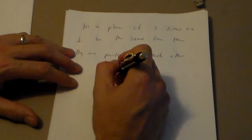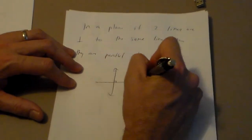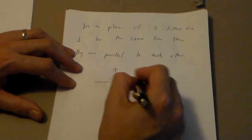So if I have a line like that and a line like that and a line cuts through and this is perpendicular and this is perpendicular, then we know the lines are parallel.